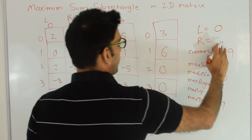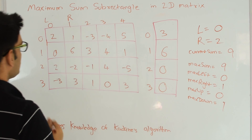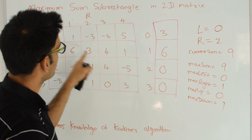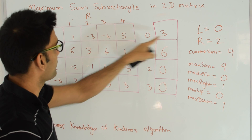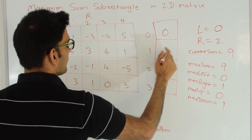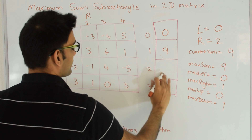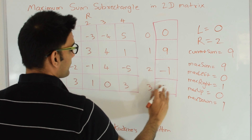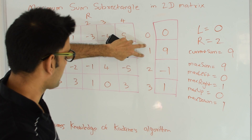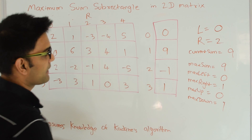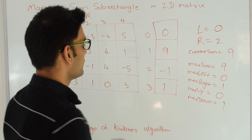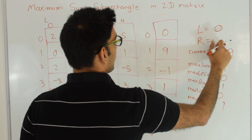We increment right to 2. We add column 2: 3+(-3)=0, 6+3=9, 0+(-1)=-1, 0+1=1. Applying Kadane's algorithm, the maximum sum sub-array has sum 9. Current sum 9 is not greater than the max sum of 9 already found, so we do nothing.